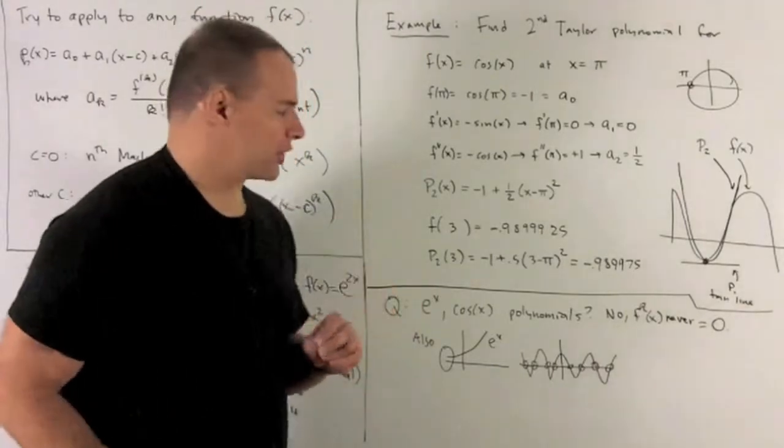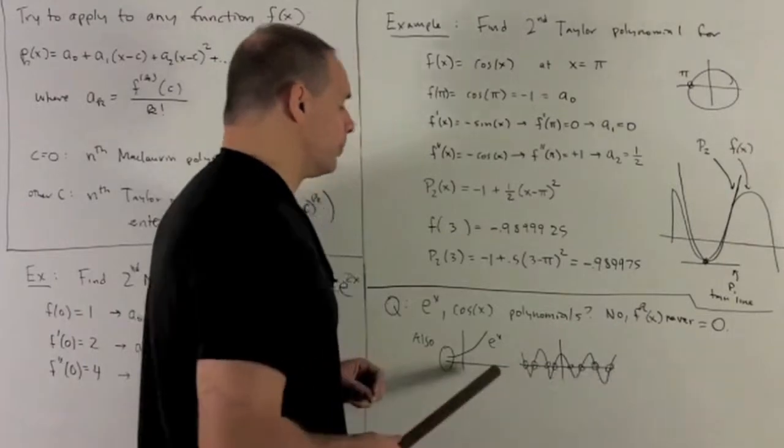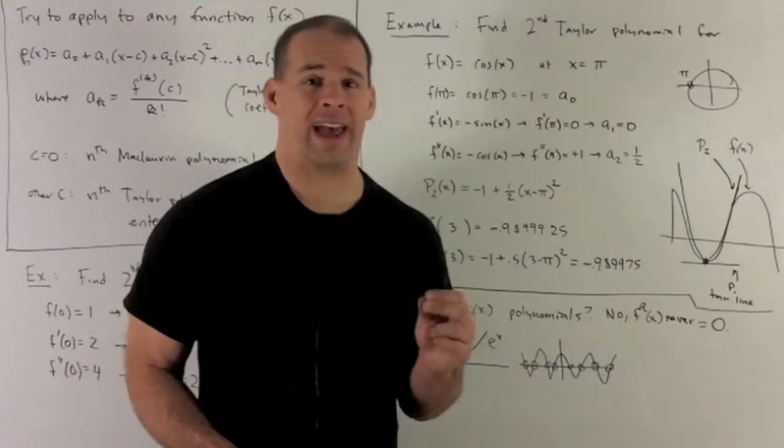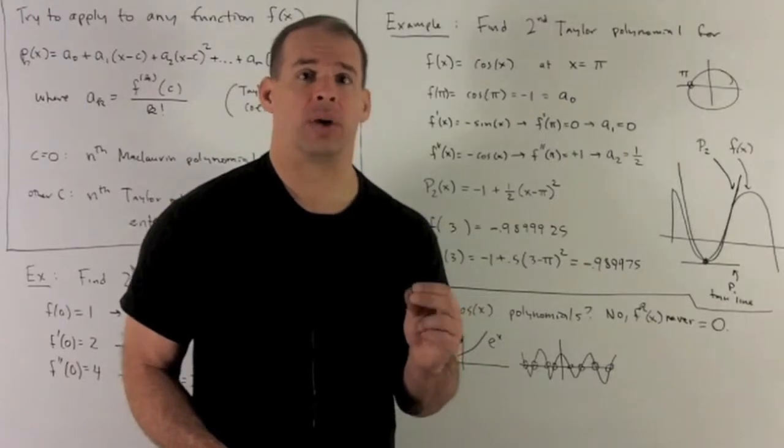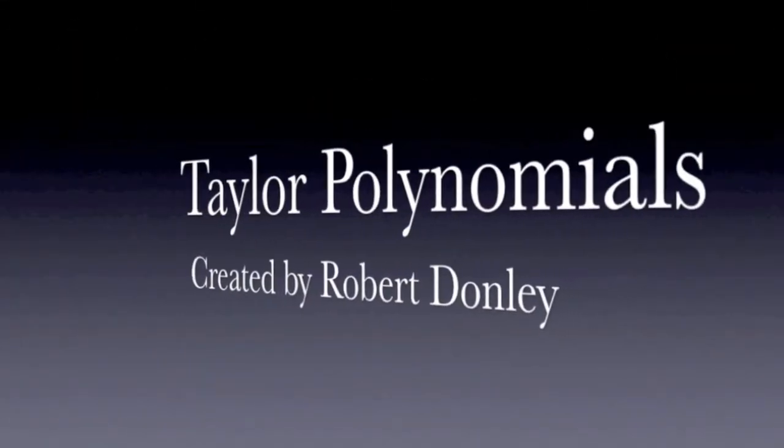If you go to the graph for cosine, note it's going to have infinitely many zeros, and that can never happen for a polynomial. Polynomial degree n can never have more than n zeros.